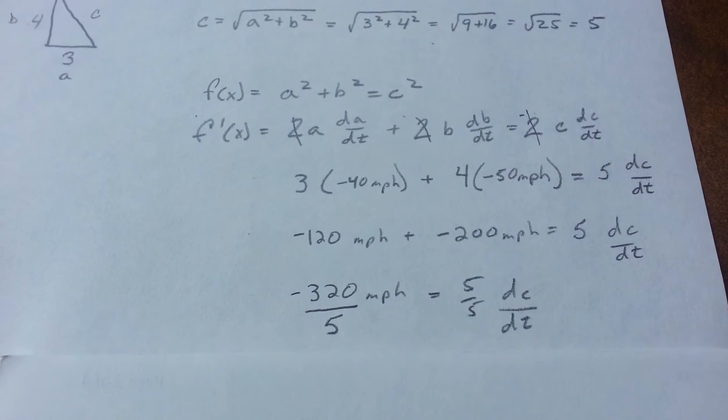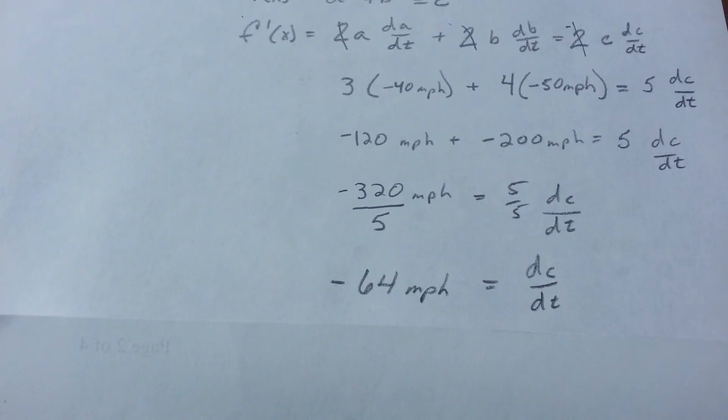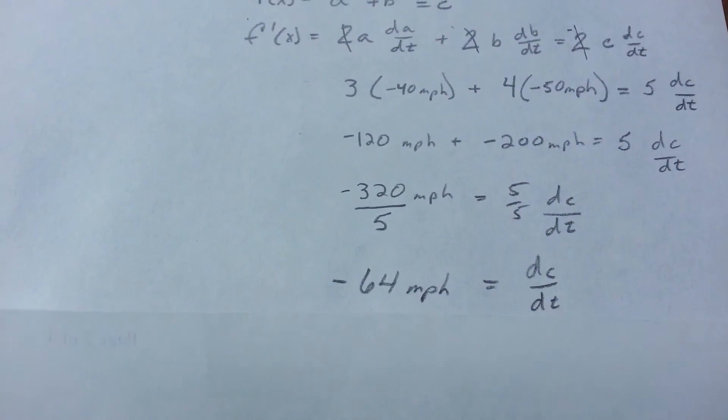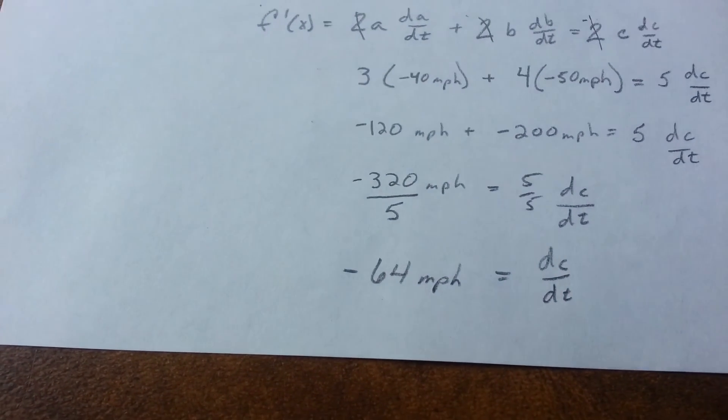We divide both sides by 5, and we come up with negative 64 miles an hour. And that is our final answer for this problem.